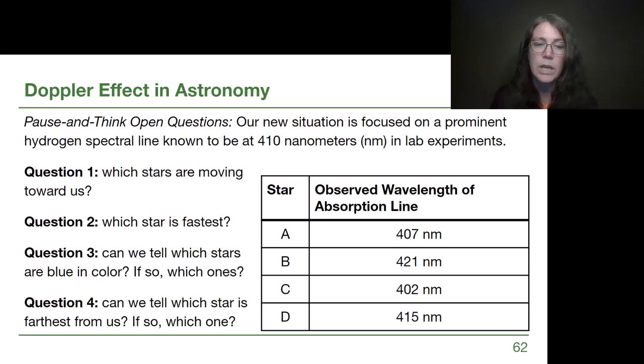Okay, so for stars moving towards us we don't have blue and red that we can look at as colors to shift towards. We need to now understand that moving towards us we know is blue shifted, but then we add that layer of understanding that blue shifting means we are shifting to shorter wavelengths. So we're looking for stars where the observed wavelength is shorter, smaller number, than what it's supposed to be. Star A is smaller by 3 nanometers and star C is also smaller than 410 nanometers. It's at 402 nanometers instead. So for question one, A and C are the correct answers here.